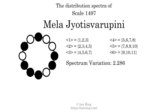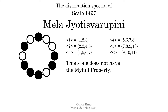The spectrum variation is the sum of all the widths, divided by the number of tones. The spectrum variation of this scale is 2.286. Since the variation is greater than 0, this indicates that the scale is not perfectly even. The highest spectrum width is 3, and since this is greater than 1, we know that this scale is not maximally even. If every spectrum has exactly 2 specific intervals, we call that the Myhill property. This scale does not have the Myhill property.